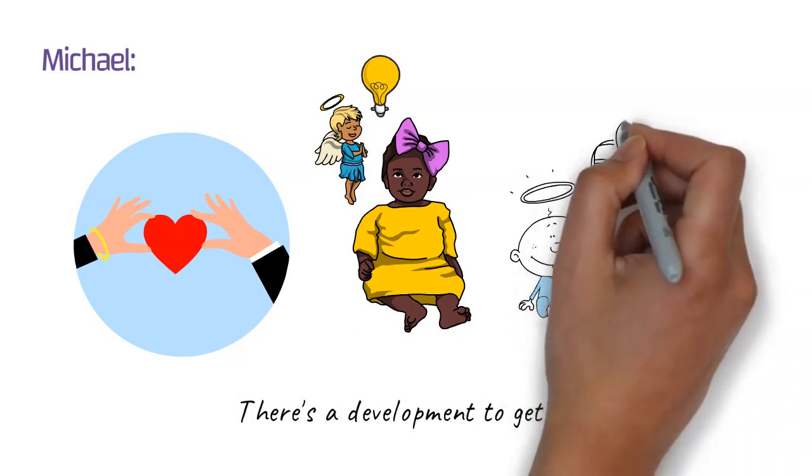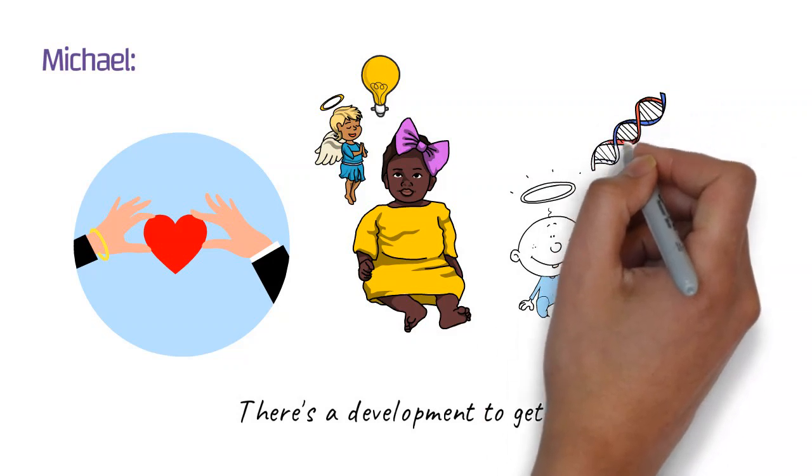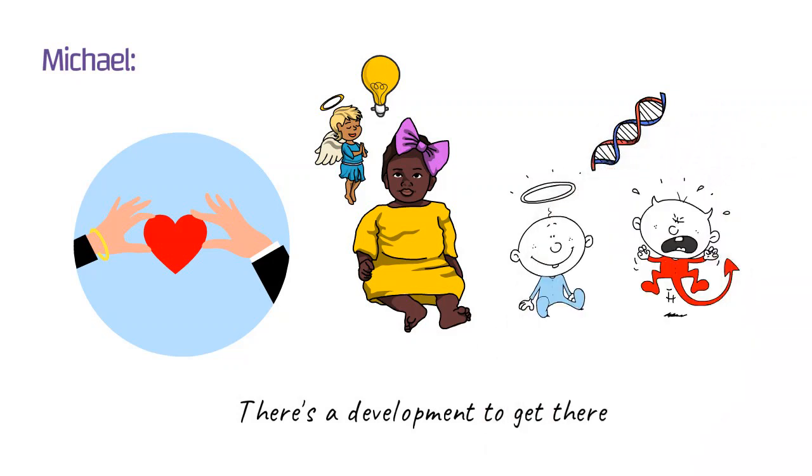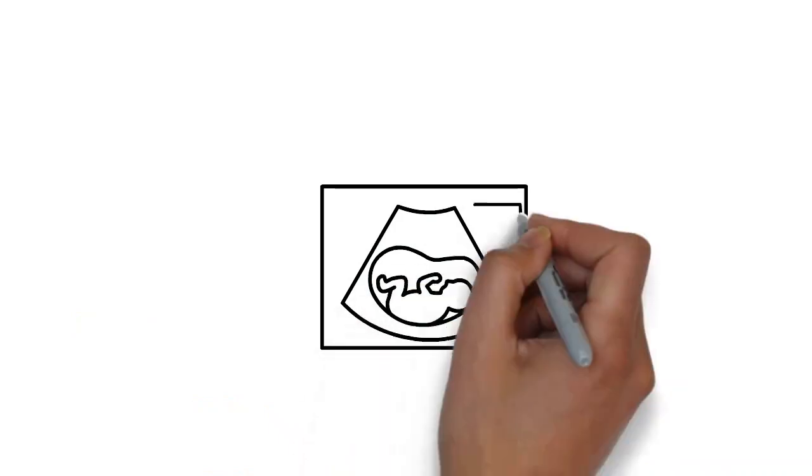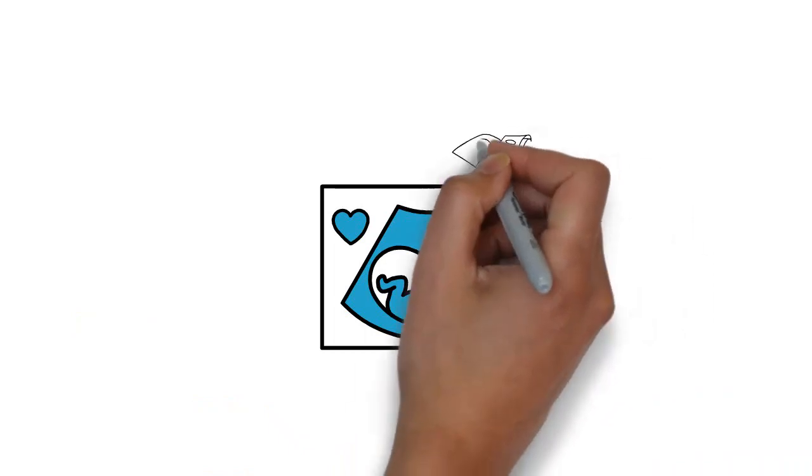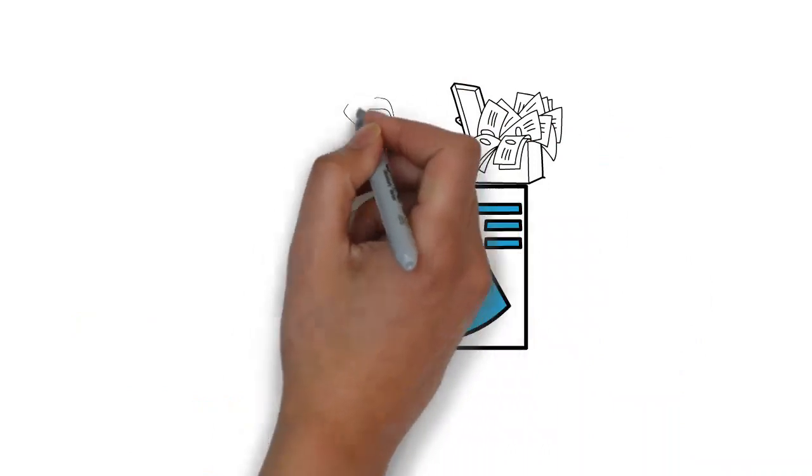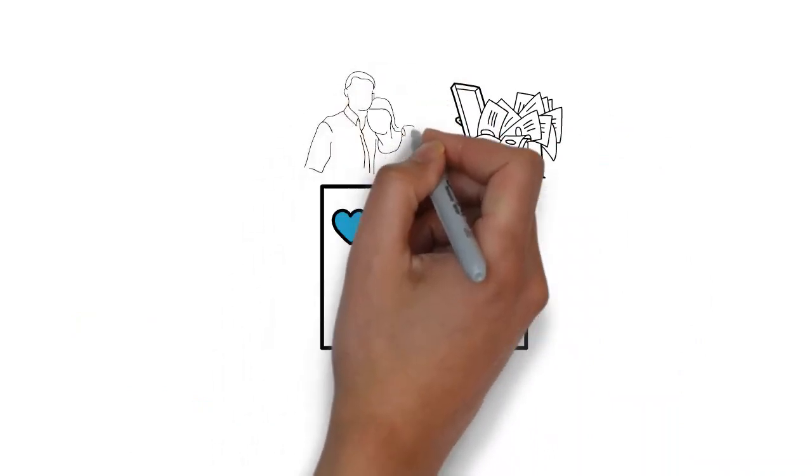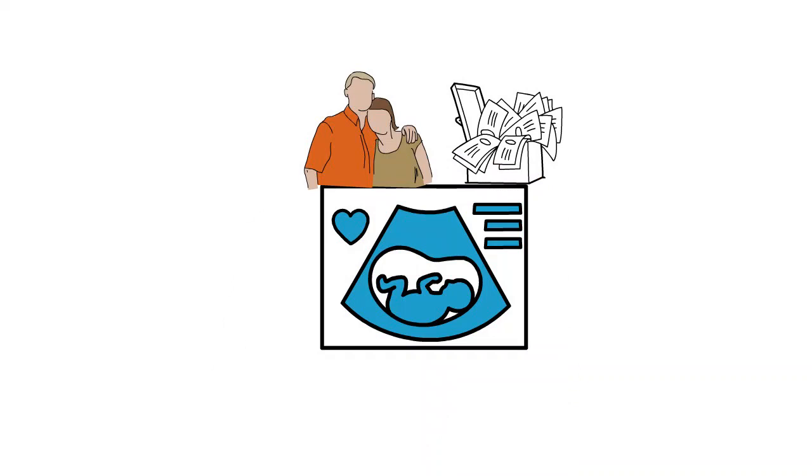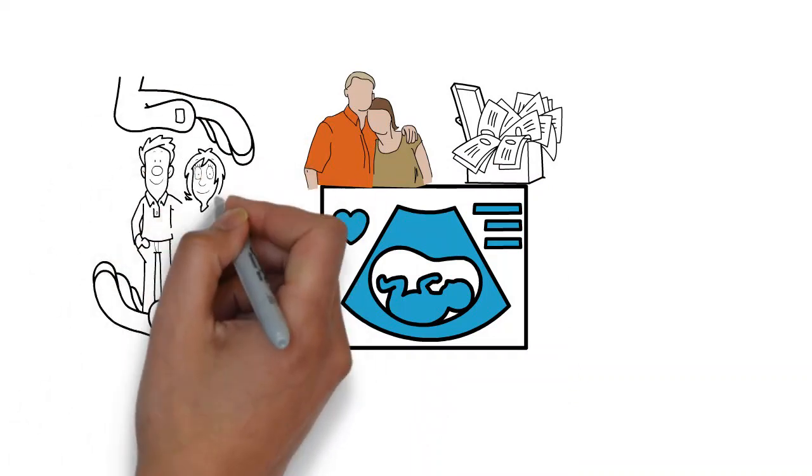And those layers, which start with the genetics of the mother and father, but then it's also the experiences that that awareness has in the womb of the mother, the conditions that the awareness is going to be born into, which include the socioeconomic conditions of the family, the love or lack of love between the mother and father.